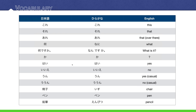A more casual way of saying that is うん and ううん. And then we have some generic objects we're going to be using a lot throughout this lesson: chair is いす, pen is the same — ペン. Pencil is えんぴつ.